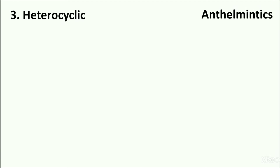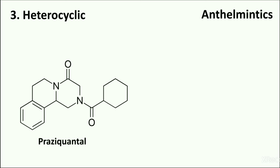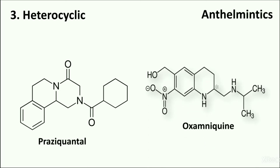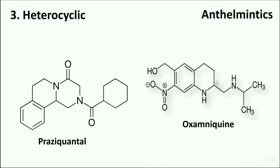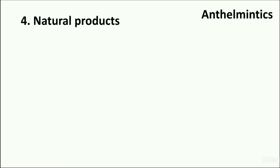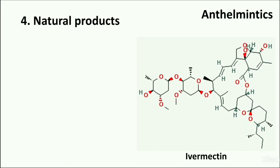In the third category, heterocyclic compounds, the main drug candidates are praziquantel and oxamniquine. The next drug candidate, ivermectin, is produced by the filamentous bacterium Streptomyces avermitilis. That is why it belongs to the category of natural products.